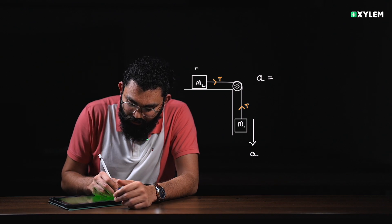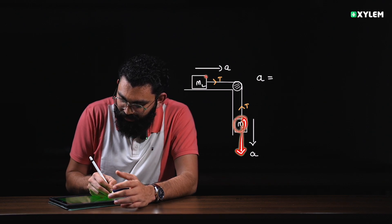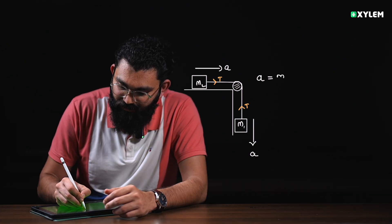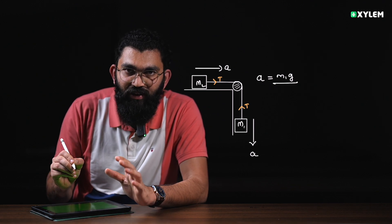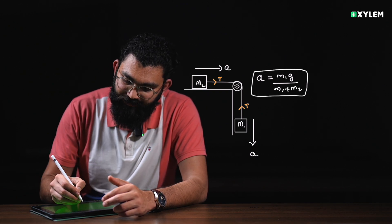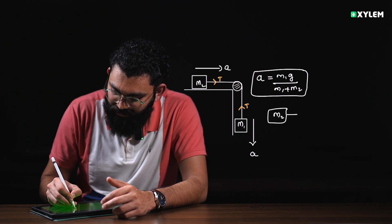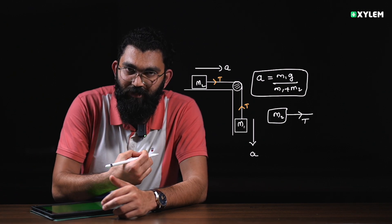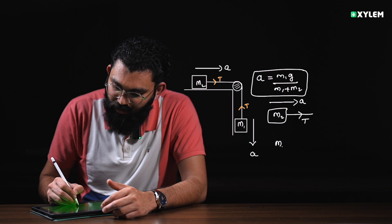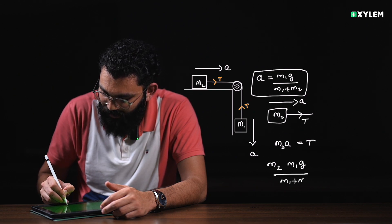M1 accelerates along the horizontal direction. We find the acceleration: the weight of M1 is not active along the horizontal, so the normal reaction cancels the weight. Acceleration equals M1g divided by total mass M1 plus M2. For tension, looking at block M2: M2 times A equals tension. So tension equals M1 times M2 times g divided by M1 plus M2.